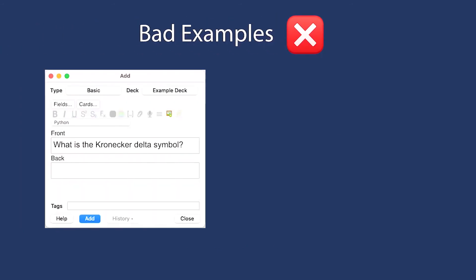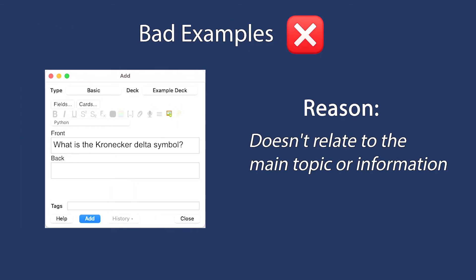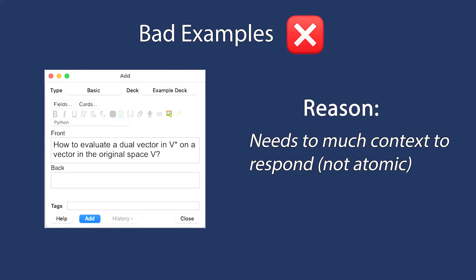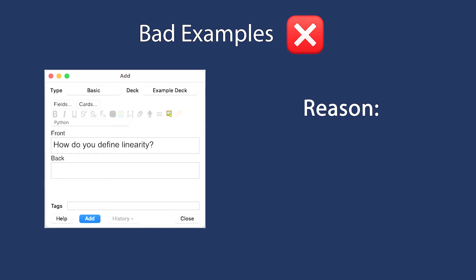Some bad examples are: 'What is the Kronecker delta symbol?' — the reason being it doesn't relate to the main topic or information. 'How to evaluate the dual vector in V* on a vector in the original space V?' — the reason being it needs more context to respond; it's not atomic enough. 'How do you define linearity?' — the reason being it's too vague and broad, and not future-proof, as the context may only be evident in the present.